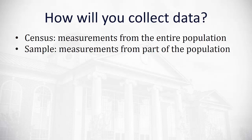Contrast that with what's done more often, which is a sample. A sample is when we just take measurements from part of a population. It's easier to get a hold of, and if we can do it randomly, we can make some really good inferences about the general population with just a sample.